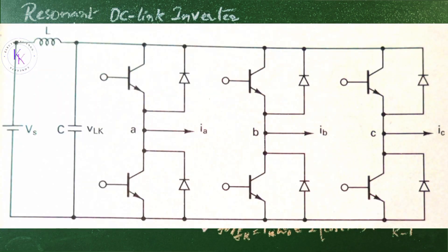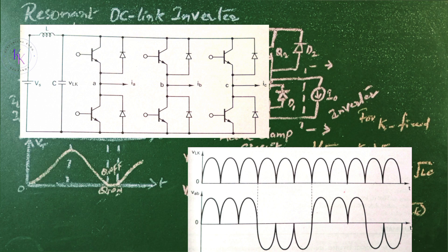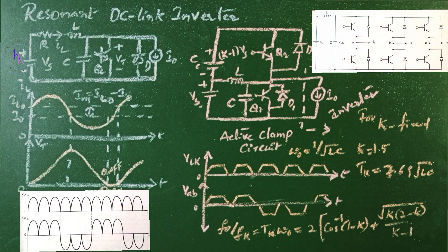The three-phase DC link inverter is shown in the figure. The inverter devices are gated in such a way as to set up periodic oscillations on the DC link LC circuit. The devices are turned on and off at zero link voltages, thereby accomplishing lossless turn on and turn off of all the devices. The waveforms for the link voltage and the inverter line-to-line voltages are as shown in this figure. This is regarding the resonant DC link inverter.